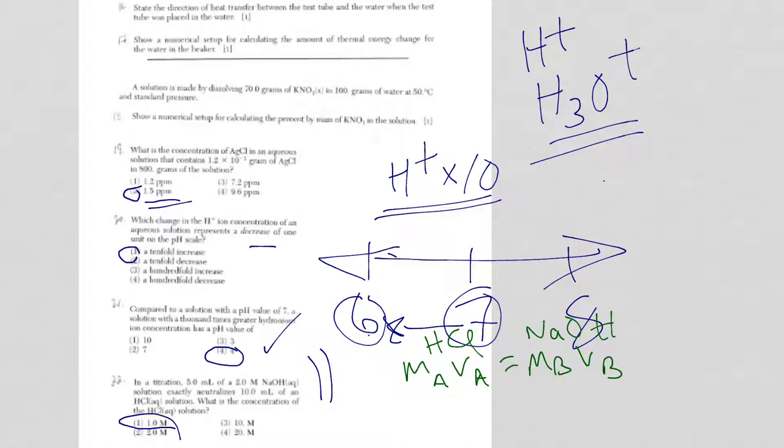So my concentration of my acid is what I'm looking for. The volume of the acid, 10 mils. On the other side, the molarity of the base was 2 molar and 5 mils. So 2 times 5 is 10, 10 divided by 10 is 1, and that's why the answer is choice 1.